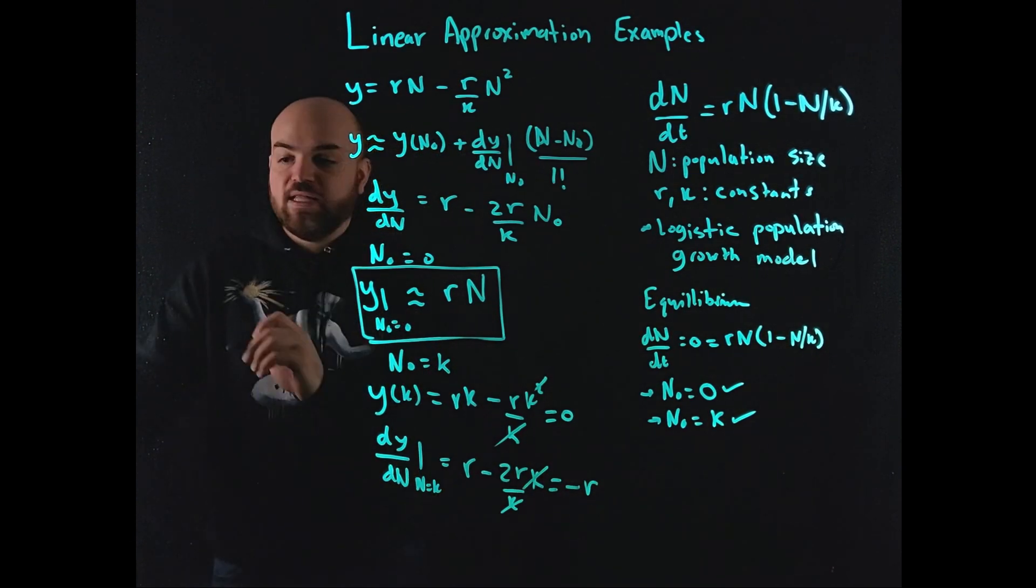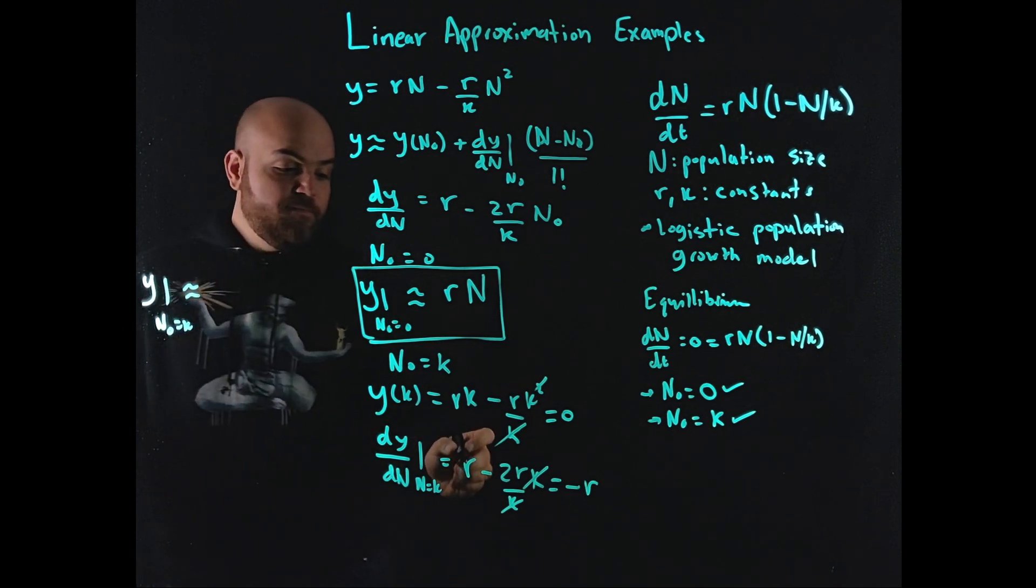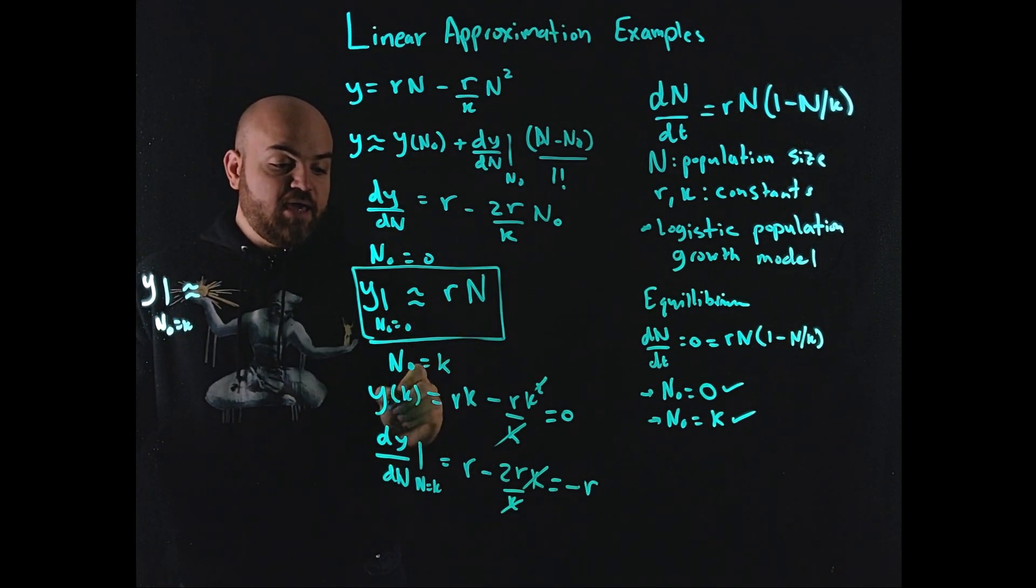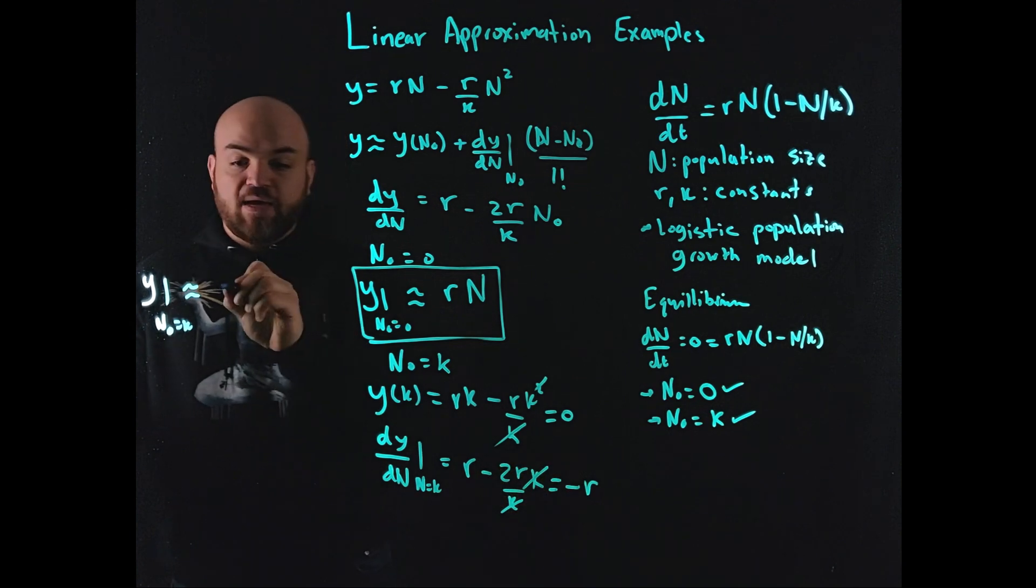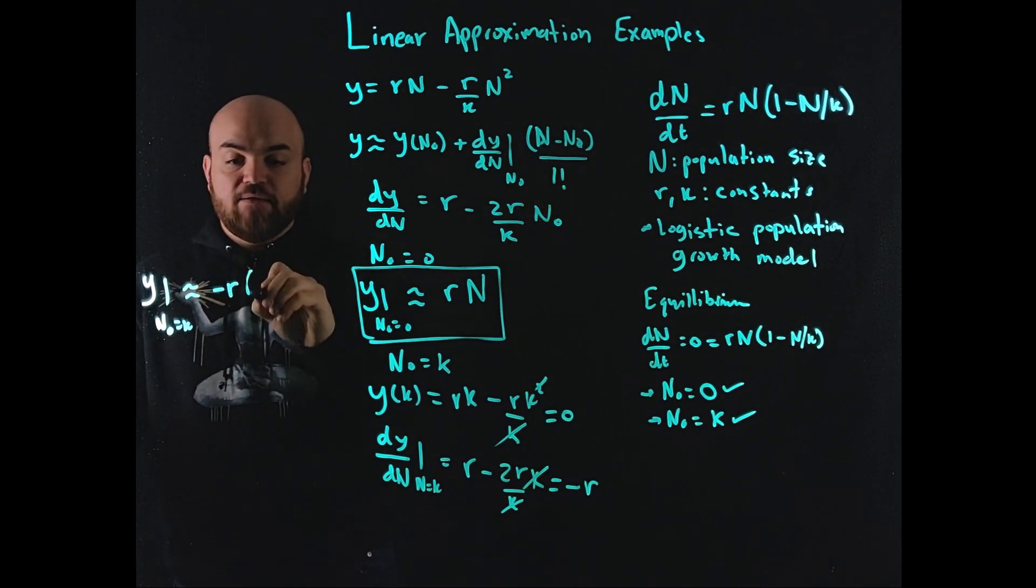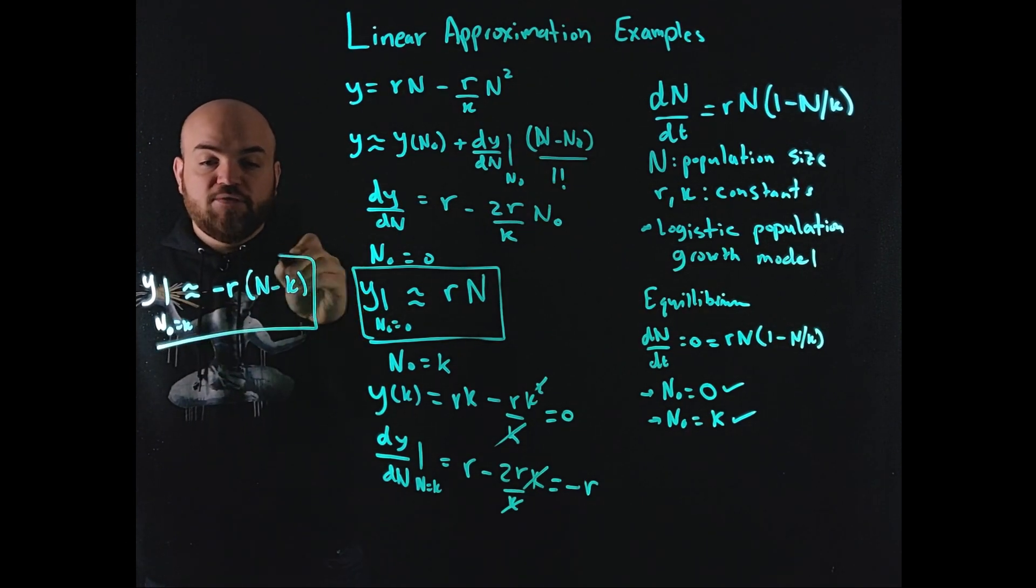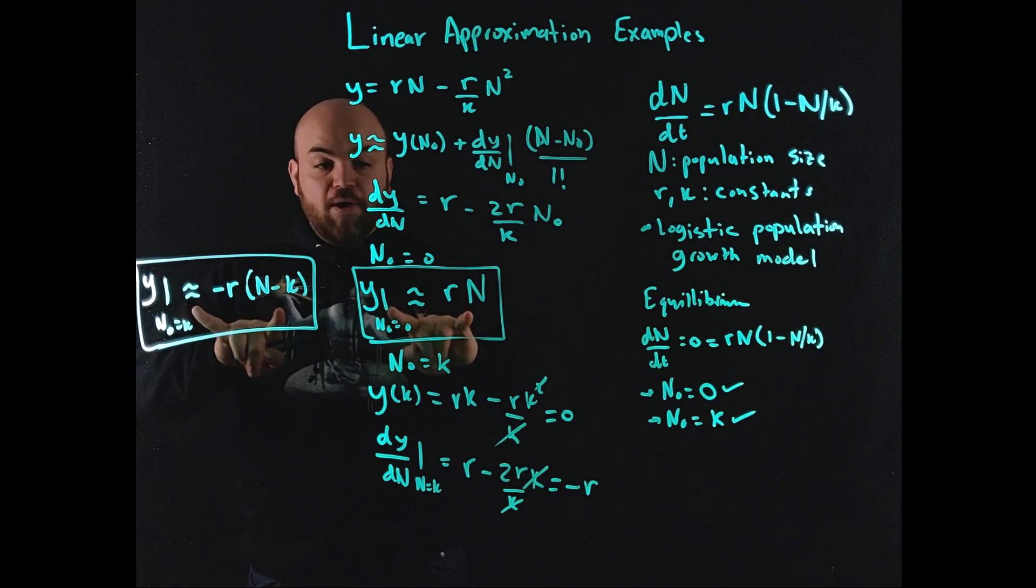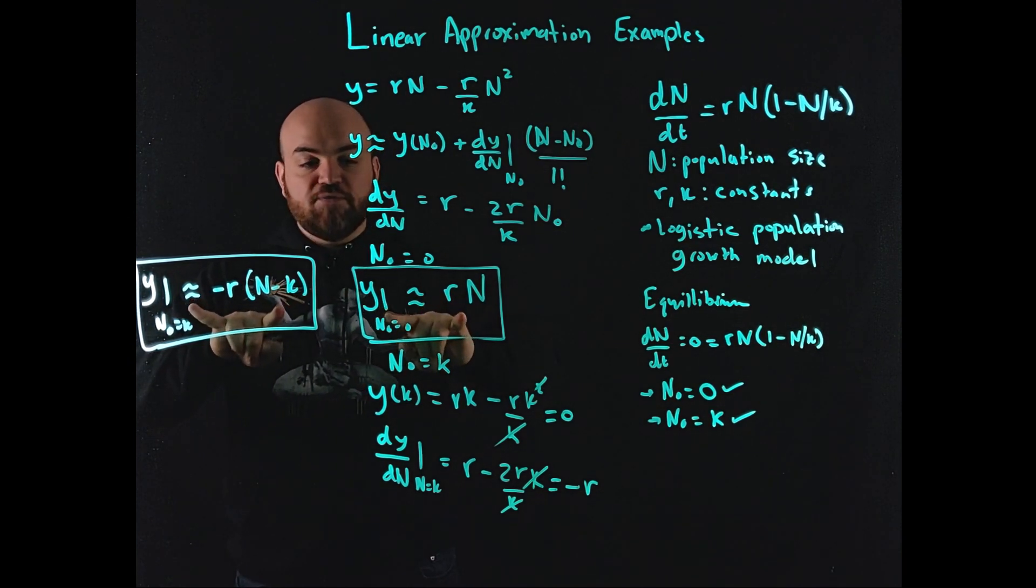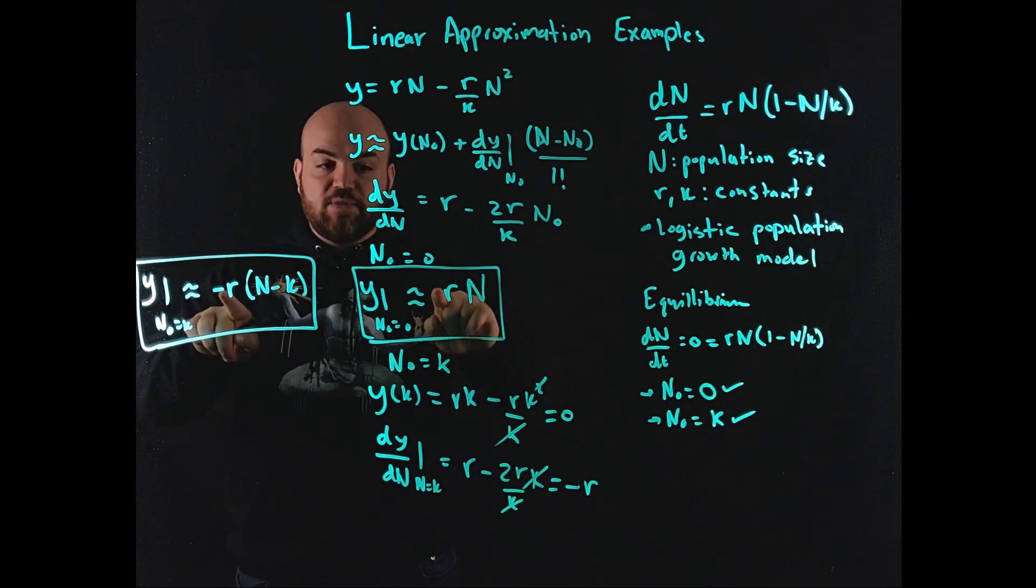So our system approximation then, y at n naught equal to k is approximated around the point of y of k, which is 0, nothing here, plus the derivative of y with respect to n at k, which is minus r, times n minus k. Right? Because n minus n naught. So this is the approximation of the system at the other equilibrium point. So you can see that these equations are not hugely different, right? They're similar, but the signs are kind of flipped. There's a constant here, yes. But here you see r times n, r times n. The sign is flipped here. The sign is not flipped. So this is like a negative slope. This has a positive slope.